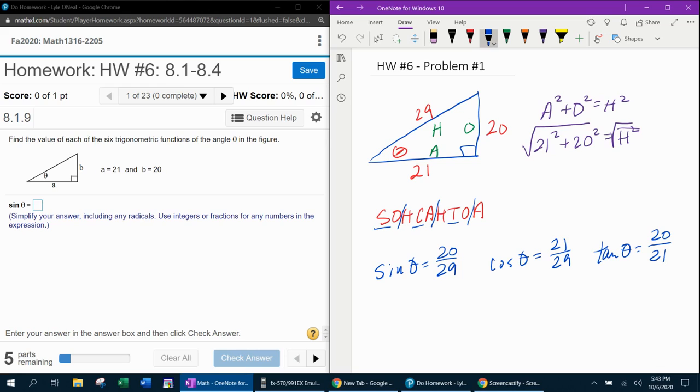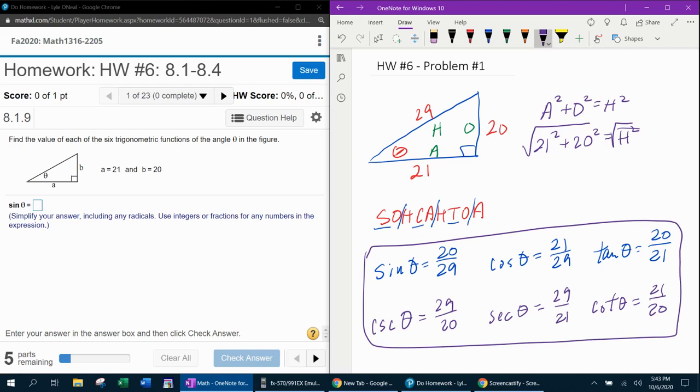And if you can get the first three, the next three are super easy. Cosecant is the reciprocal of sine. Cosecant is the reciprocal of cosine. And cotangent is the reciprocal of tangent. And there's the answer to that problem. Those are the six trigonometric ratios.